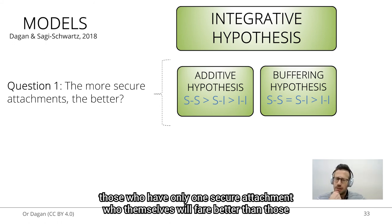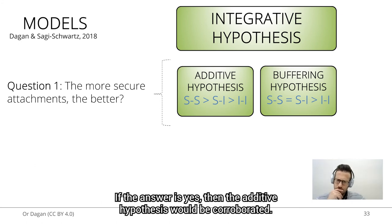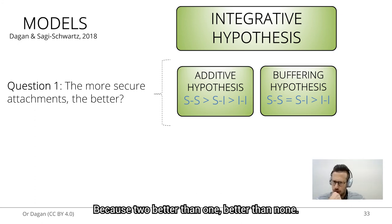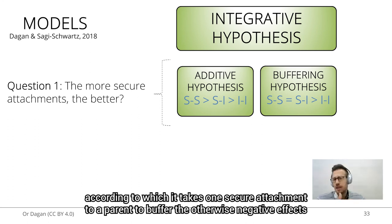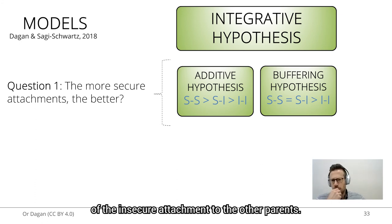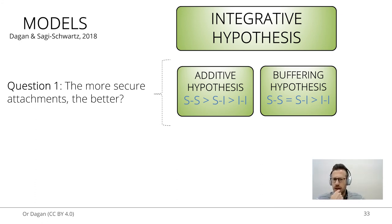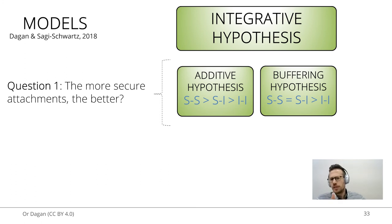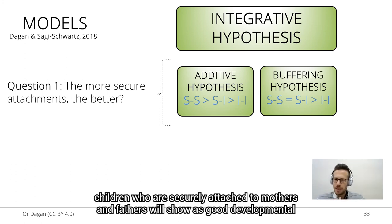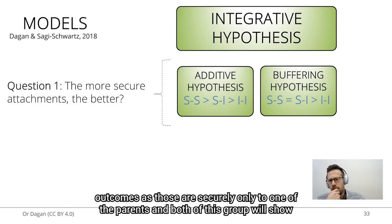If the answer is yes, then the additive hypothesis would be corroborated — two is better than one, better than none. However, some empirical evidence supports the buffering hypothesis, according to which it takes one secure attachment to a parent to buffer the otherwise negative effects of the insecure attachment to the other parent. According to the buffering hypothesis — which is mutually exclusive with the additive hypothesis — children securely attached to both parents will show as good developmental outcomes as those securely attached to only one parent, and both groups will fare better than those insecurely attached to both parents.